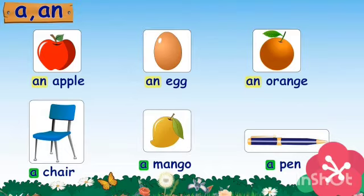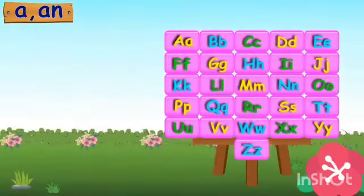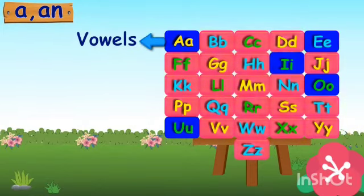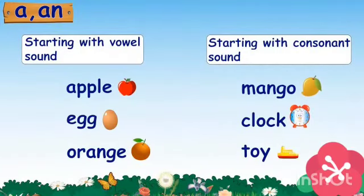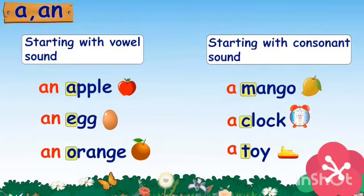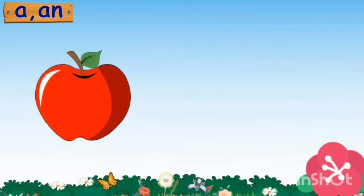We have 26 letters in English. Out of them, only five letters are vowels and the rest are consonants. The rule is: when a singular naming word begins with the sound of any of the vowels, we use AN before it. When a singular naming word begins with the sound of any consonant, we use A before it. Let's learn with examples.